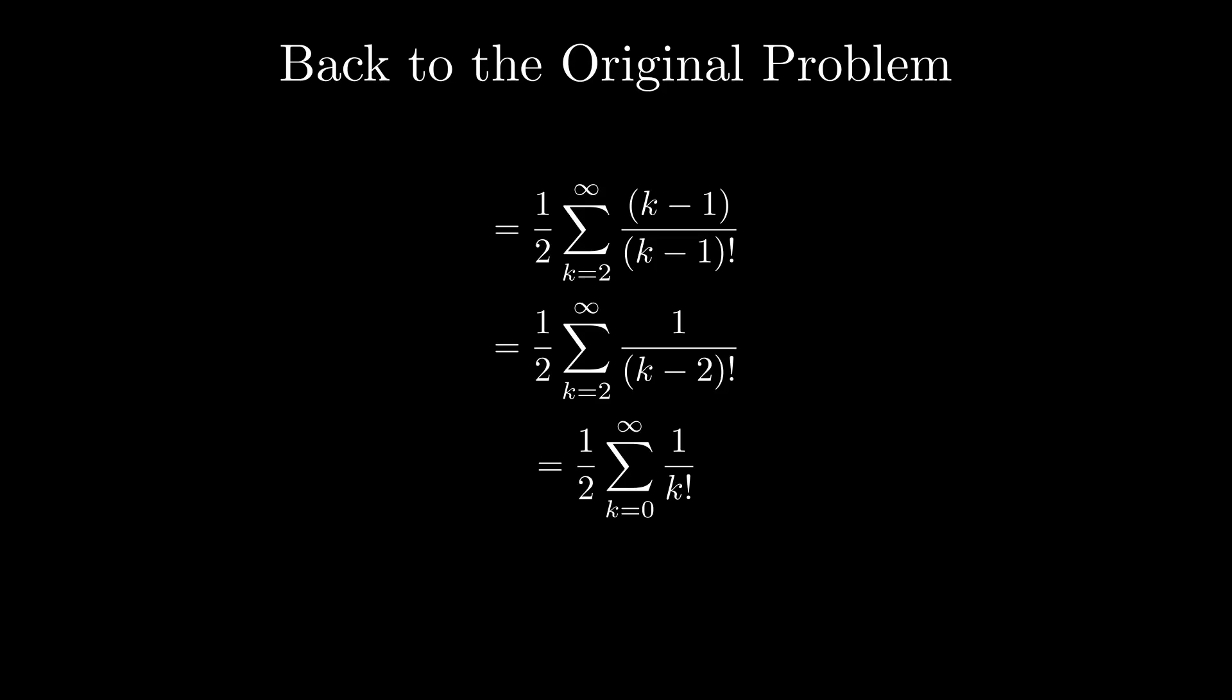After some simplifications, we find that the answer is 1 over 2 times the sum from k equals 0 to infinity of 1 over k factorial. This is actually the Taylor series expansion for e. So the final answer is 1 half times e.